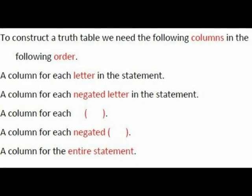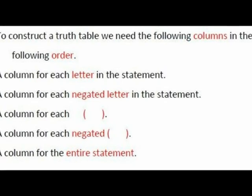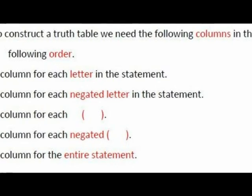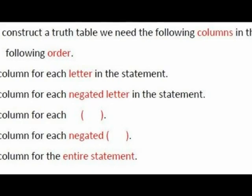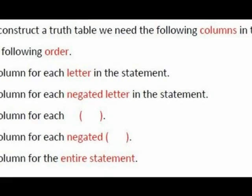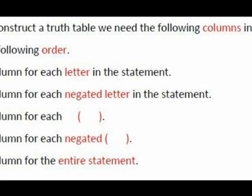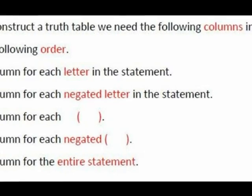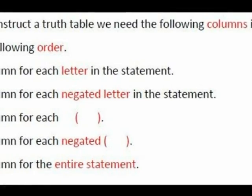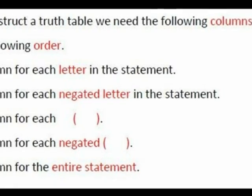In a truth table, the truth values in a column will depend on the truth values of preceding columns. Therefore a truth table must be constructed in the correct fashion. To construct a truth table we need the following columns in order: a column for each letter in the statement, then a column for each negated letter, then a column for each set of parentheses, followed by a column for each negated set of parentheses, and finally a column for the entire statement.